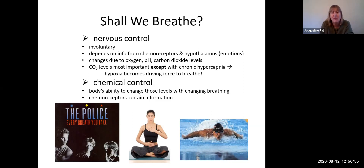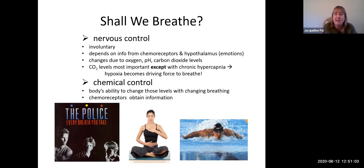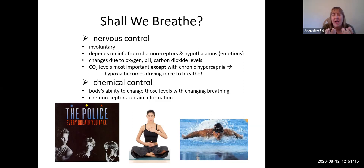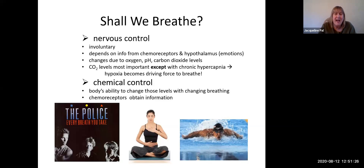We've all seen very emotional people gasping for breath, breathing much faster than normal. Most people have seen someone hyperventilate and use a little paper bag. Essentially, the nervous control variations are due to changes in oxygen levels — which is what everybody thinks — but what is much more important for 99% of the population has to do with carbon dioxide and pH levels. The most important is carbon dioxide.